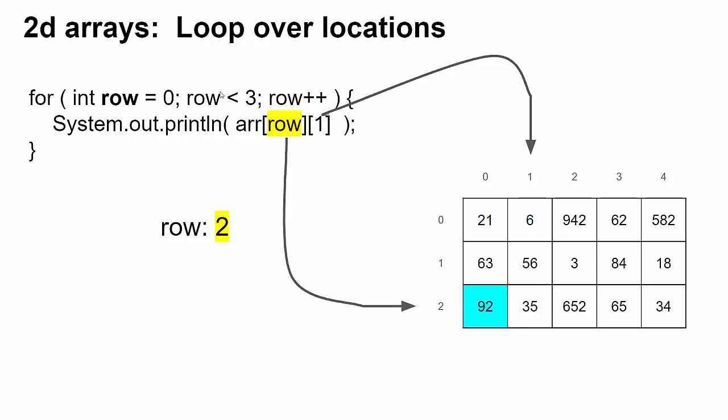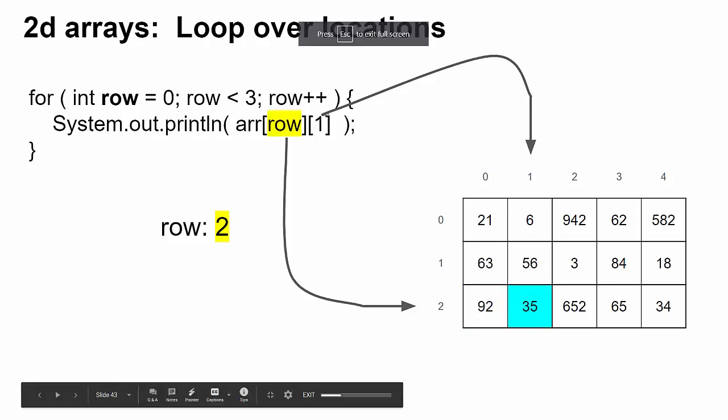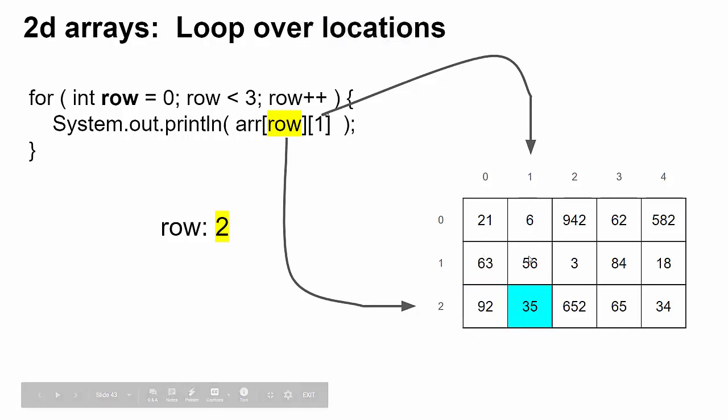And then now that we've looped back again, now row is two. And so the value at, oops, that's not correct. Hold on. When we were making the slides, we forgot that it was column one because this number one has never changed.